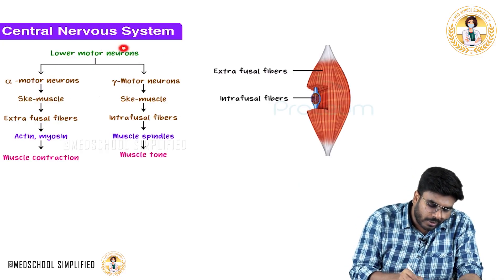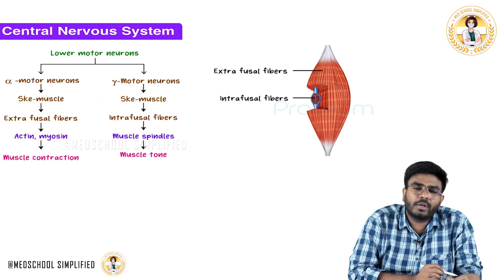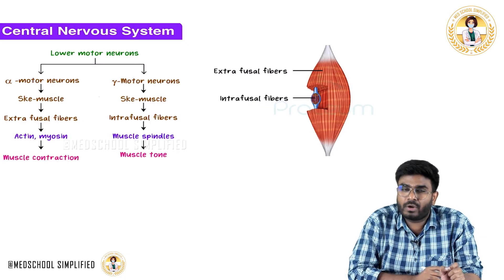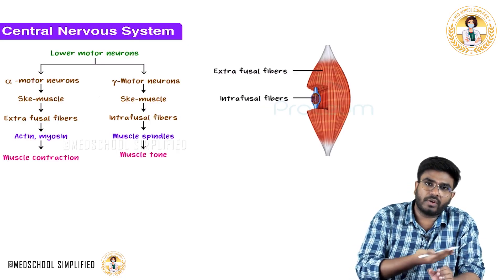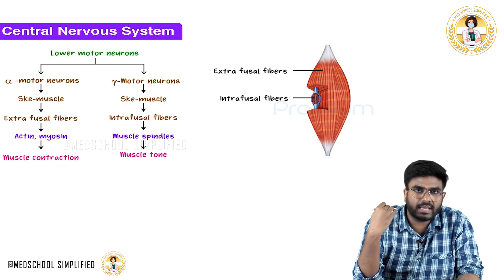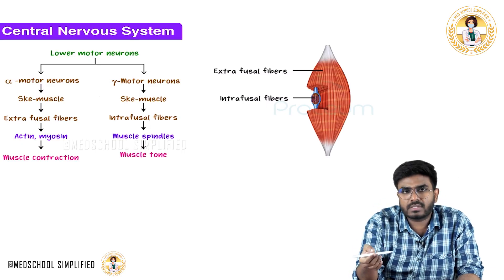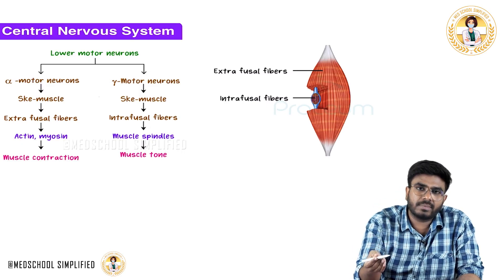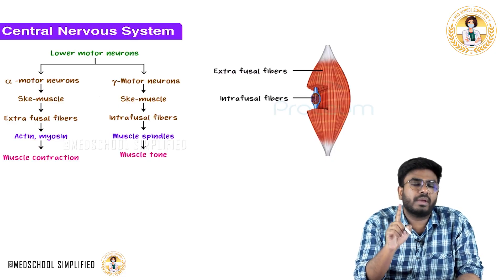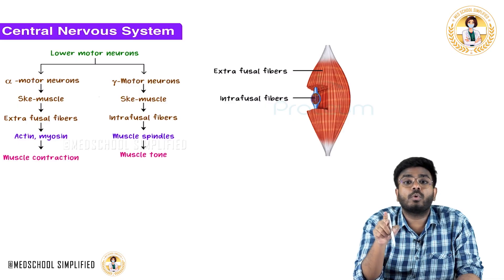Now let's talk about lower motor neurons. Where do they originate? Lower motor neurons originate in the ventral horn of the spinal cord. When you do a cross section of the spinal cord, you can see the dorsal horns as well as the ventral horns. Dorsal horns are sensory in nature; ventral horns are motor in nature. So, from the ventral horn of the spinal cord, the lower motor neurons originate.